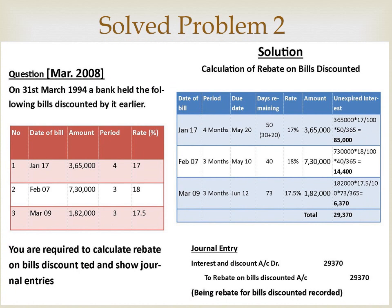Here is another problem. This question was asked in March 2008. On 31st March 1994, a bank held the following bills discounted by it earlier. The date of the bill, amount, maturity period, and rate of discount applicable are given. You are required to calculate rebate on bills discounted and show journal entries.